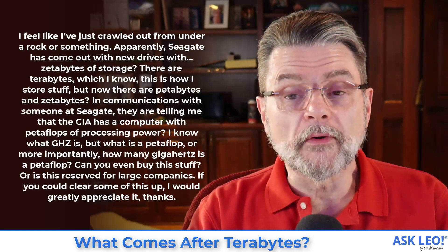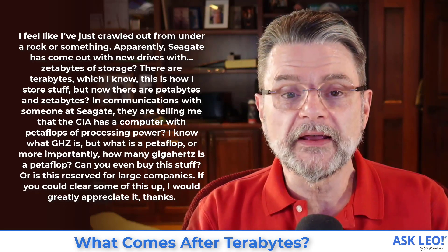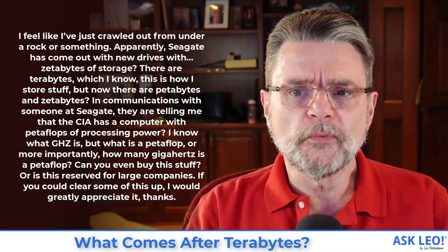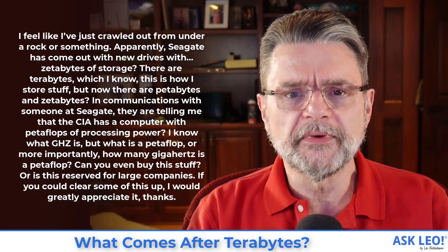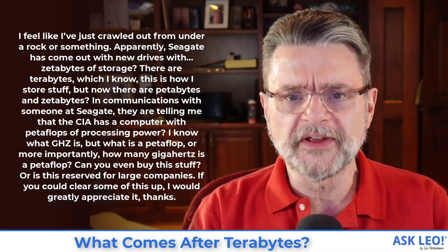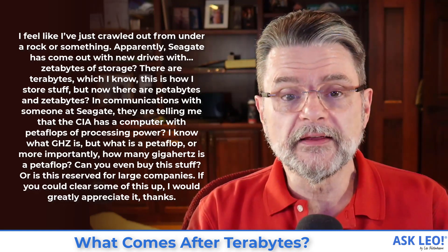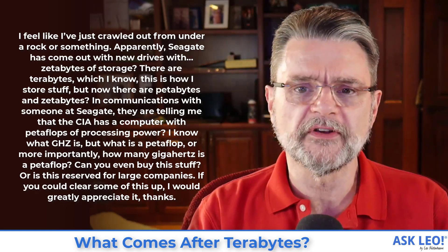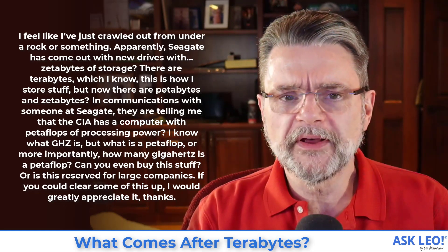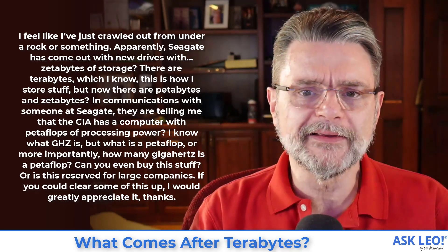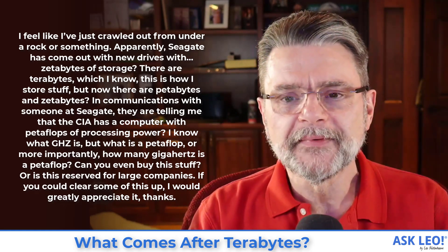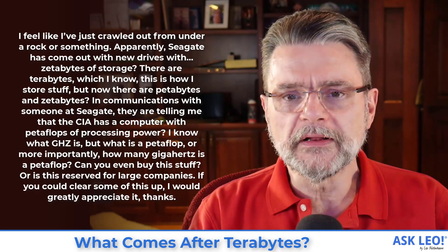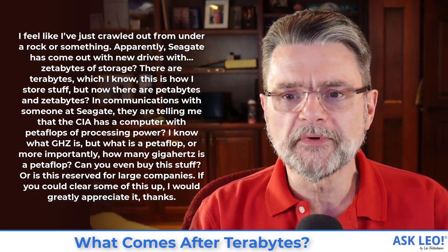I feel like I've just crawled out from under a rock or something. Apparently Seagate has come out with new drives with zettabytes of storage. There are terabytes, which I know — this is how I store stuff. But now there are petabytes and zettabytes. In communications with someone at Seagate, they're telling me that the CIA has a computer with petaflops of processing power. I know what gigahertz is, but what is a petaflop, or more importantly, how many gigahertz is a petaflop? Can you even buy this stuff or is this reserved for large companies? If you could clear some of this up, I would greatly appreciate it.